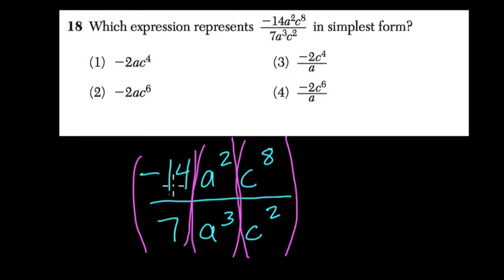So negative 14 divided by 7. Those are the numbers here, the coefficients, so we divide those first. Nice and straightforward. What is negative 14 divided by 7? Well negative divided by a positive is a negative, and 7 goes into 14 twice. So that's negative 2.